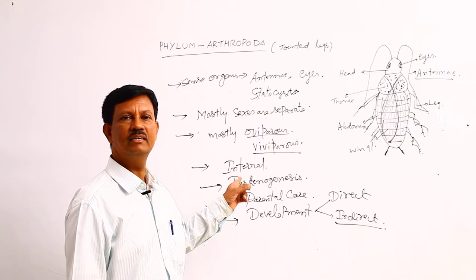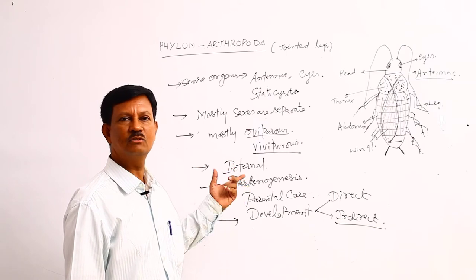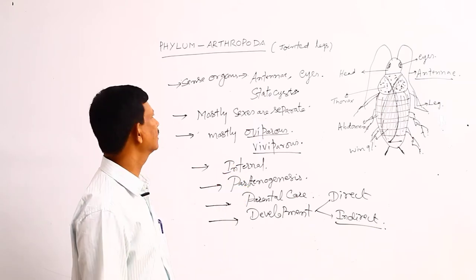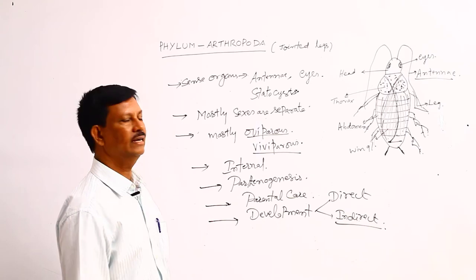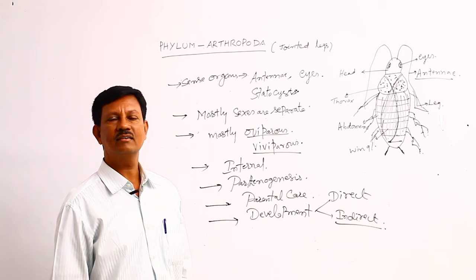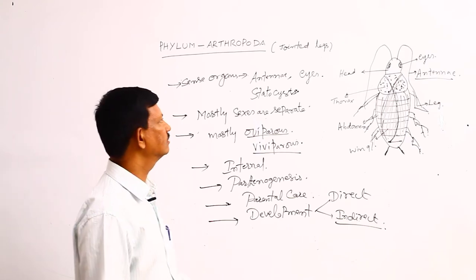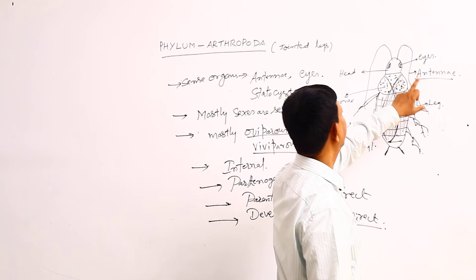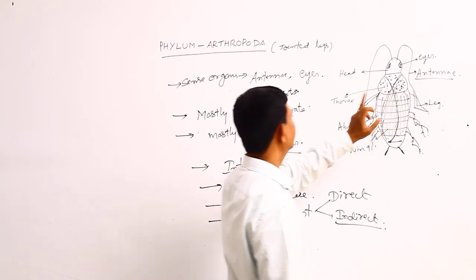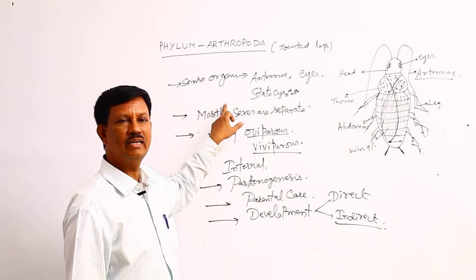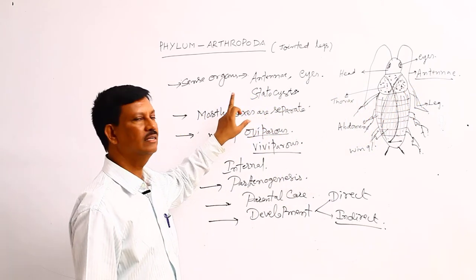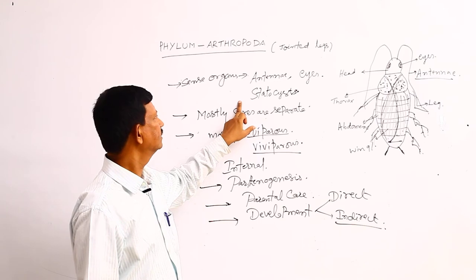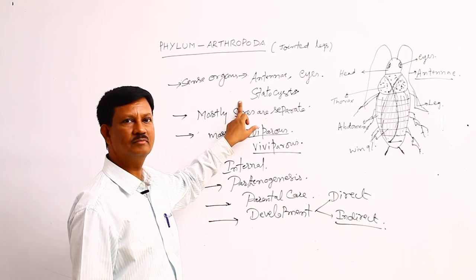The nervous system is similar to that of annelids — only a nerve ring and ventral nerve cords are present. Sense organs include eyes and antennae. Statocysts are mainly found in aquatic animals, where they balance the body and act as balancing organs.